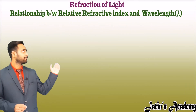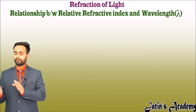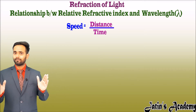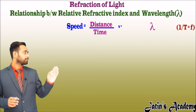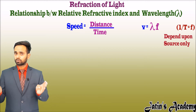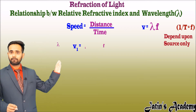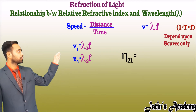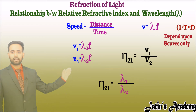Now see the relationship between refractive index and wavelength. We know that speed = distance/time, where distance is the wavelength λ, and 1/t is frequency f, so velocity = λ × f. Since frequency depends on the source of light, if the source is the same, frequency is the same regardless of the medium. So v1 = λ1 × f and v2 = λ2 × f. Substituting into n21 = v1/v2, frequency f cancels and we get relative refractive index n21 = λ1/λ2.